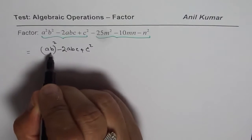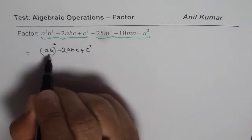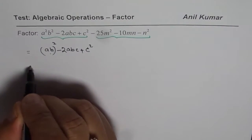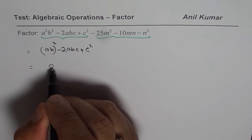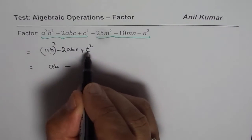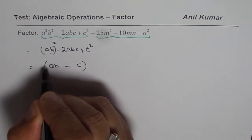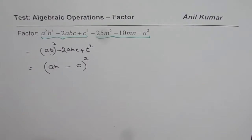Now here we have two times ab and c. That means two times both these terms. So that means this is a perfect square. So this part could be actually written as (ab - c)². Do you realize that?